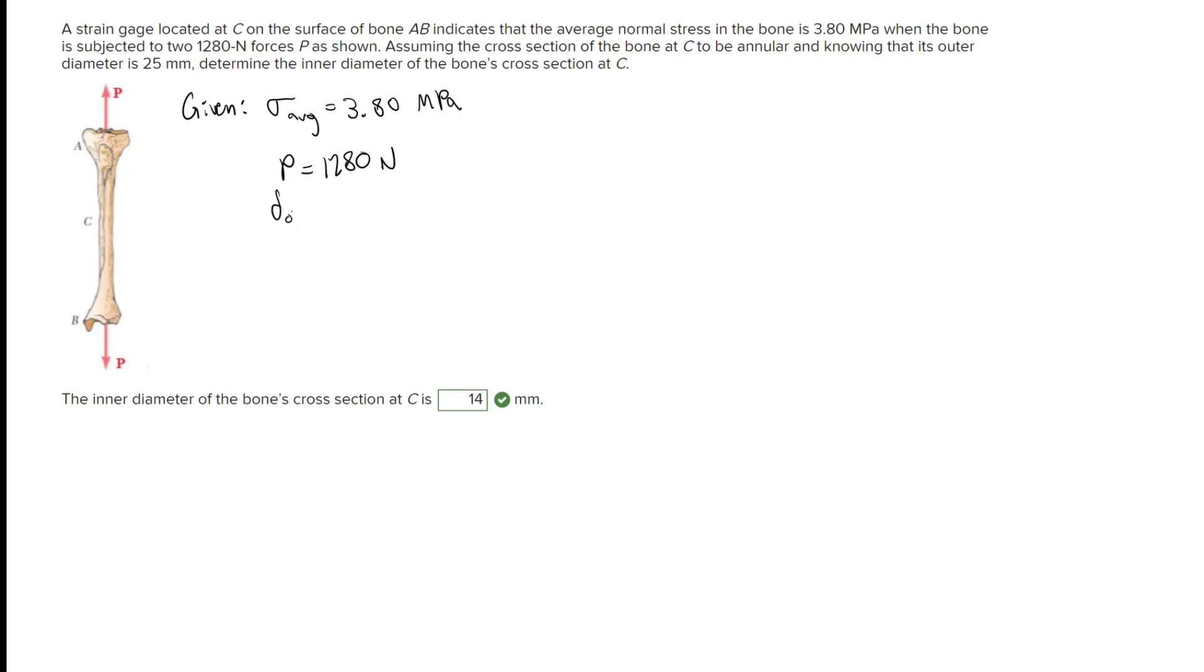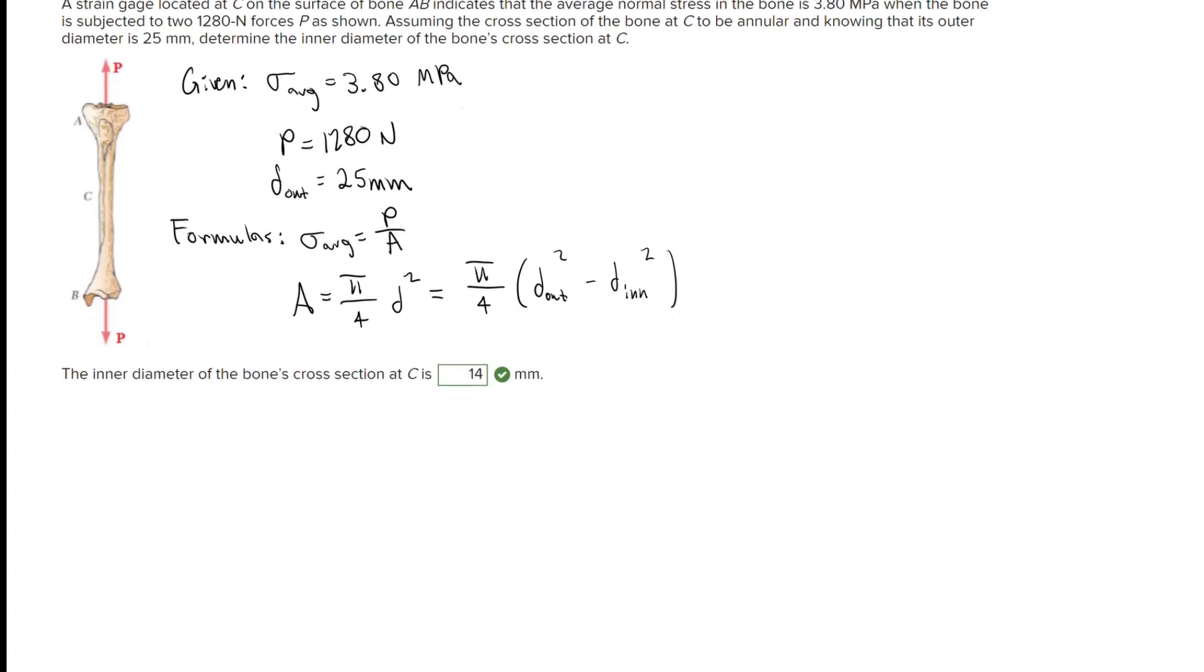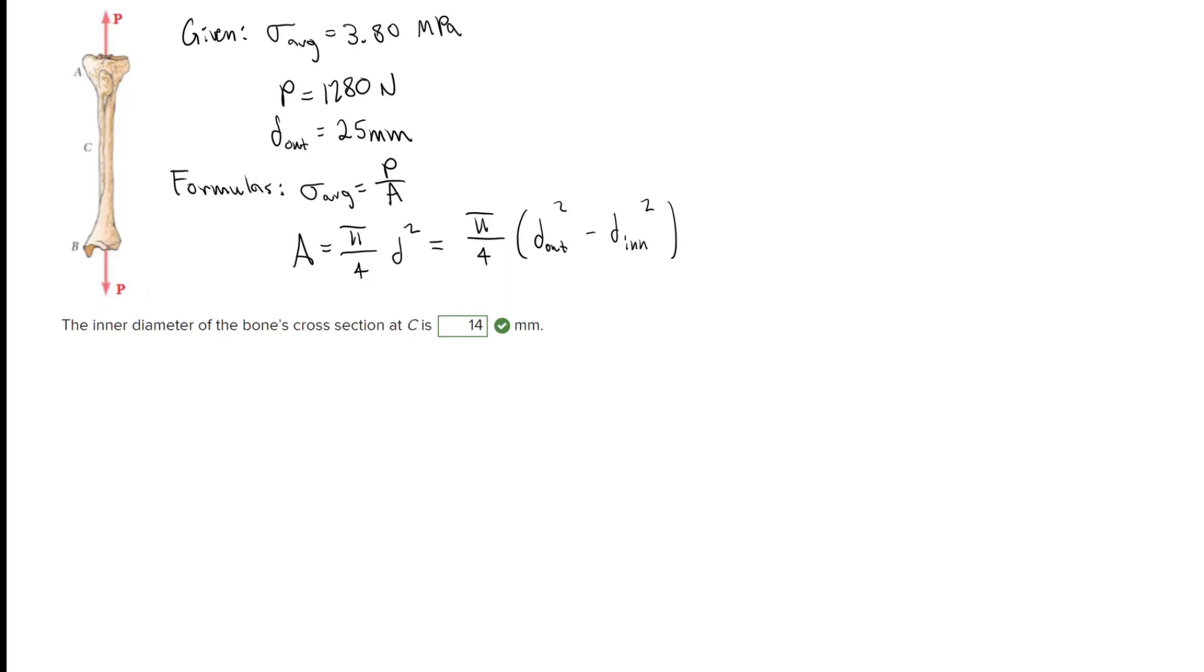I'm also going to write down the formulas we're going to use here, which is the average stress formula, which is P over A, and the formula for the area of a circle. When we have a hollow item like this with the inner and outer diameter, we're going to do pi over 4 times the outer diameter squared minus the inner diameter squared.